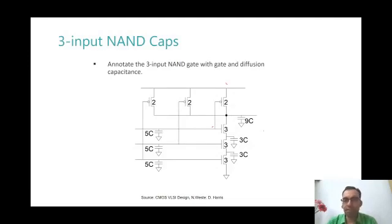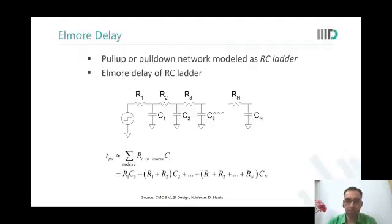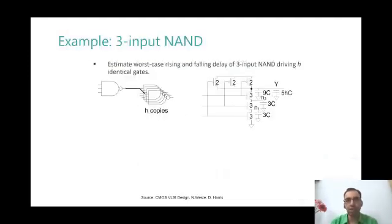Now let us put the resistances also there. So a quick refresh. We know the Elmore's equation that to get propagation delay, I have to do sum of R I to source to CI. So R1, C1 plus R1 plus R2, C2 plus R1 plus R2 plus RN to CN. We remember this. We already covered this in last or last to last class. Elmore's delay.